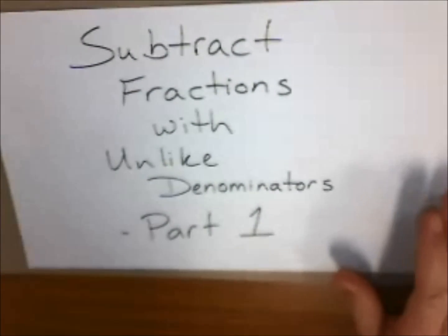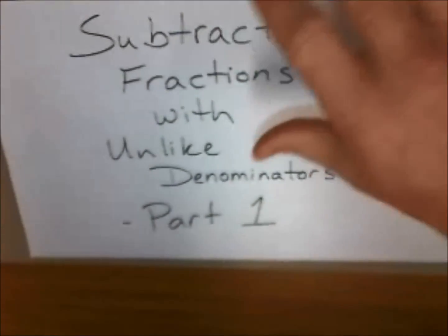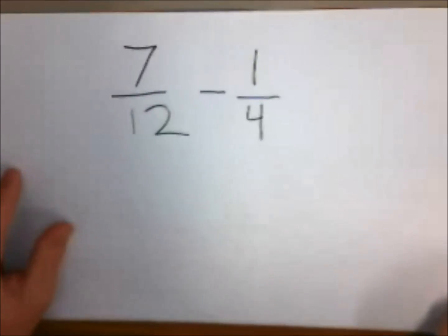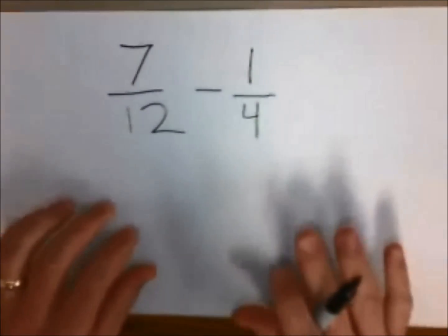Okay friends, today we are going to subtract fractions with unlike denominators. This is part one of a three-part series, and we are going to use the problem 7/12 take away 1/4, also known as a quarter.